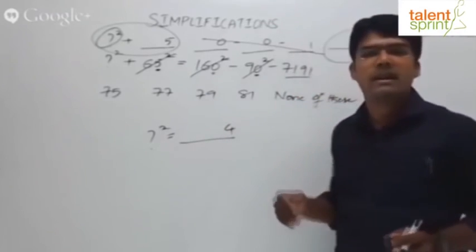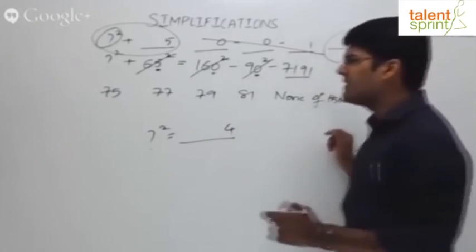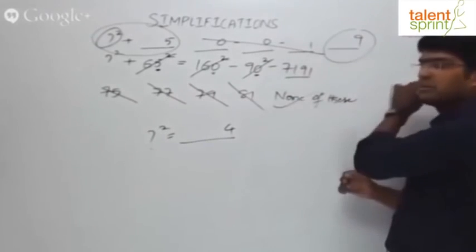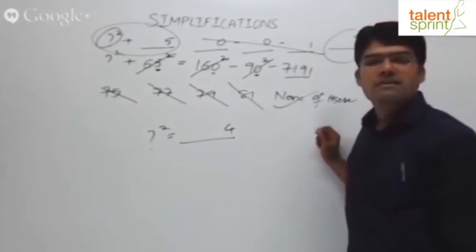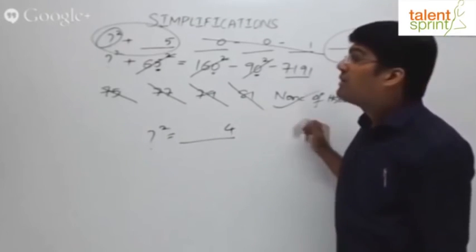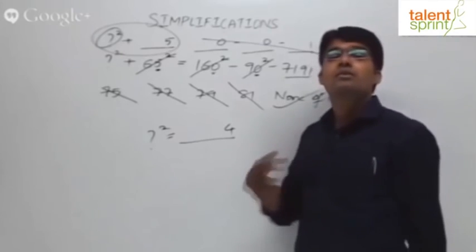So either the number should end in 8 or should end in 2. Those are the possible answers. Answers should end in 8 or in 2. Look at the options: 75, not possible. 77, not possible. Not possible. Not possible. 100 percent, fifth option, none of this is a fair answer, which I am sure most of you have followed.